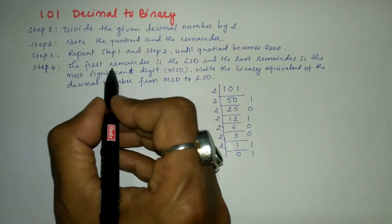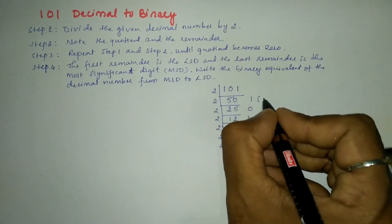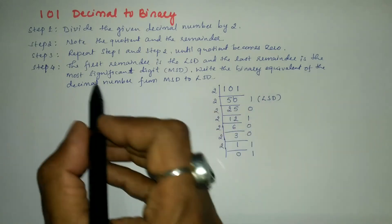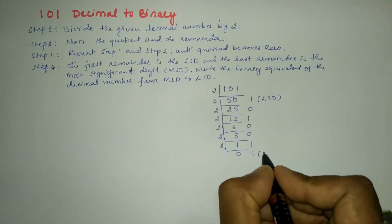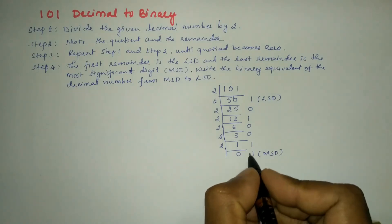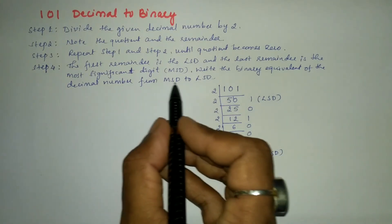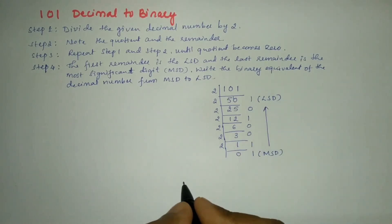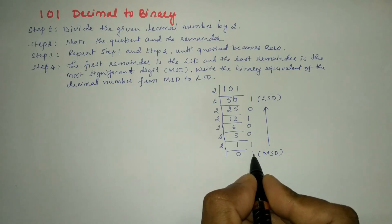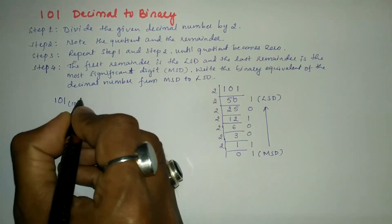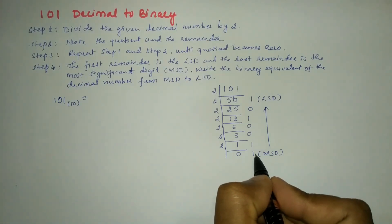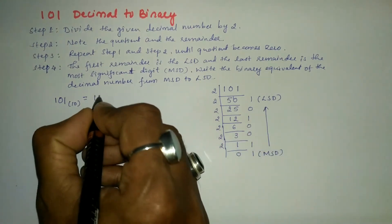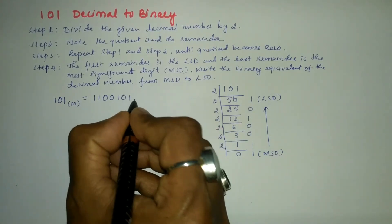As per step 4, the first remainder is the least significant digit — this is the first remainder, it is called the least significant digit. The last remainder is the most significant digit — this is called the most significant digit. We have to write the binary equivalent from most significant digit to least significant digit, that is from bottom to top. So, 101 to the base 10 is equal to 1100101 to the base 2.